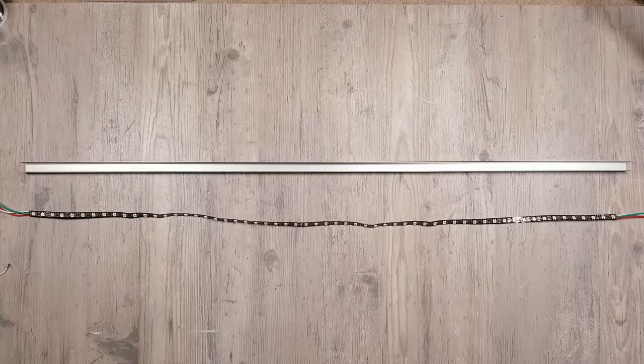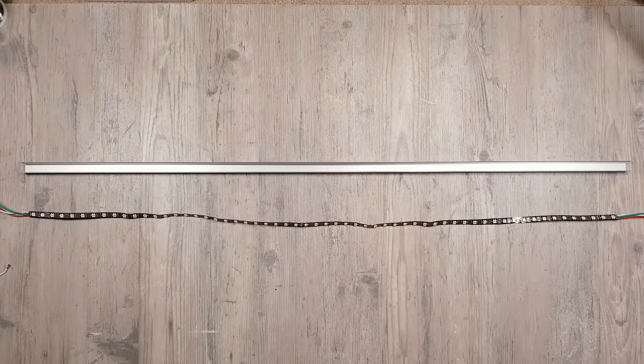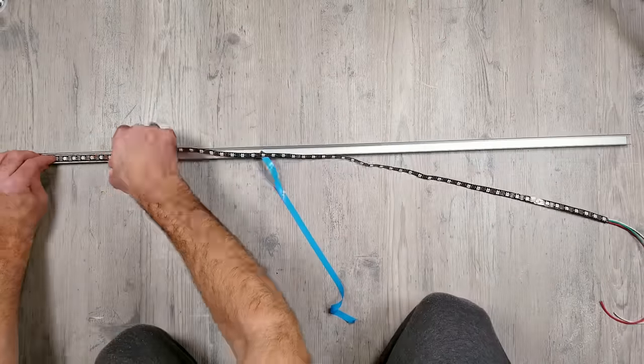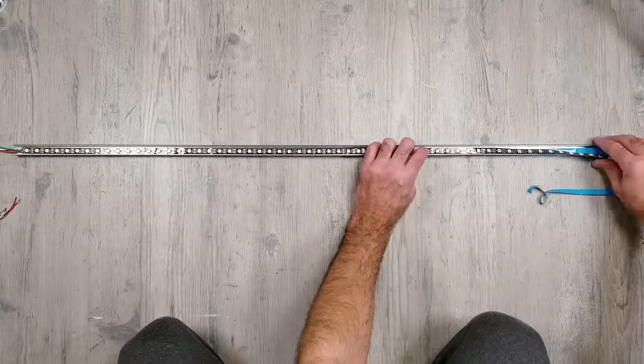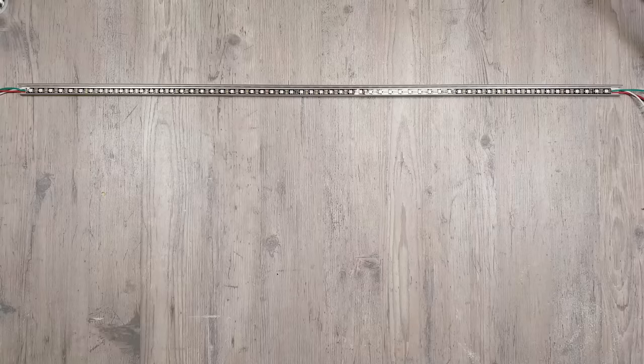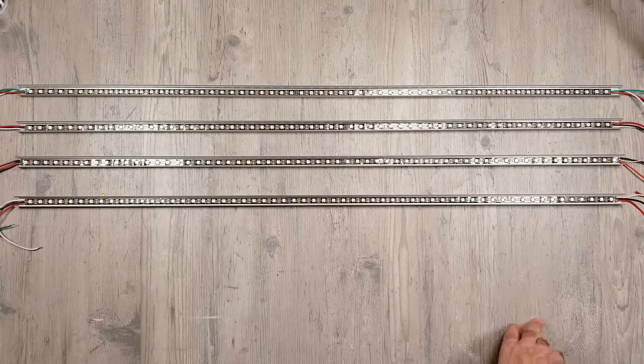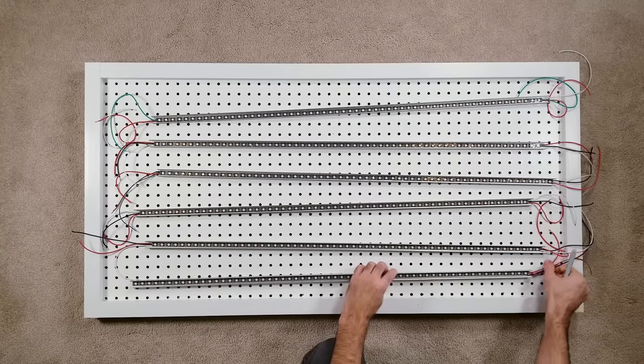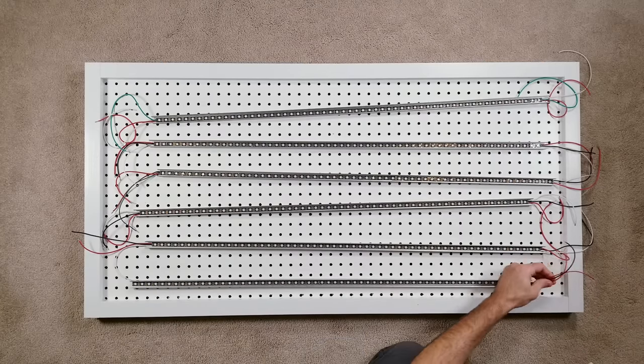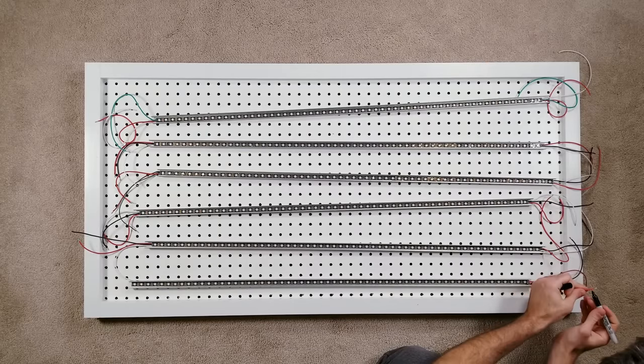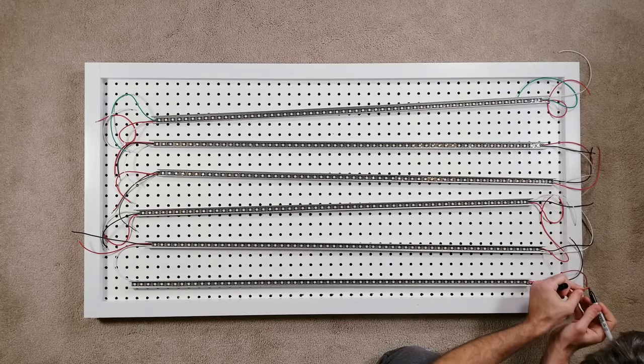While waiting for the glue to dry I'm going to start installing the strip lights into the diffuser channels. All of the LED strips have arrows pointing in one direction which is used to indicate the flow of the data line. I'm marking the beginning wires for each section so that when I'm connecting everything from behind it's a little bit easier to tell what needs to go where.